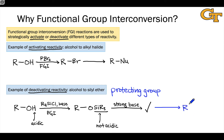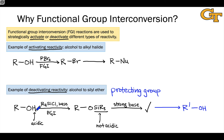For example, we might convert R to some other group R', and through a deprotection process, we can get back the hydroxyl group where we had one originally. The protecting group temporarily blocks, or masks, the hydroxyl while we do chemistry that would be incompatible with the hydroxyl group, and we can get that group back later through what's called deprotection.